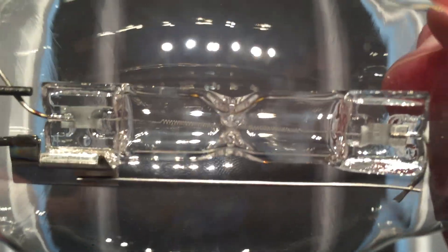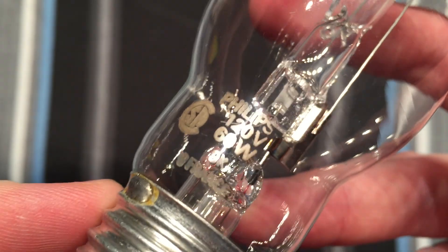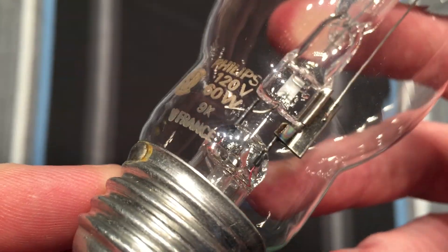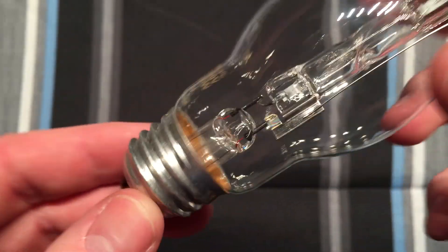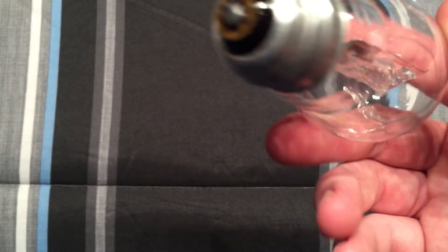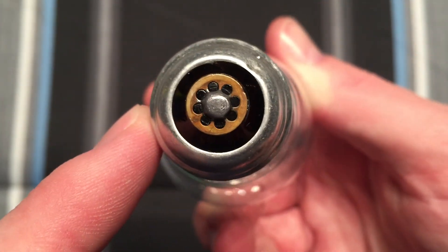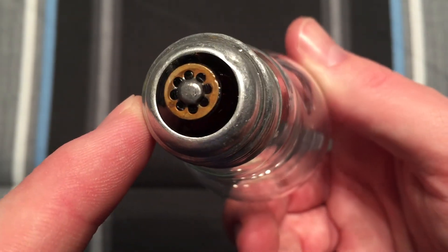You can see the halogen capsule here, and the Philips etch marking: 120 volt, 60 watt, France. Very nice bulb. You can see on the bottom the base that Philips used for a while. It was just the Philips base.